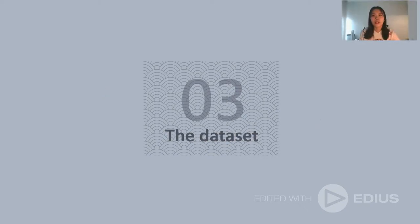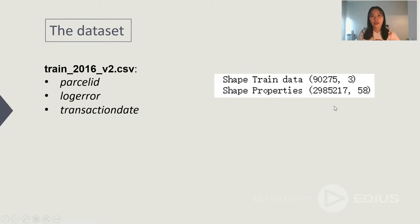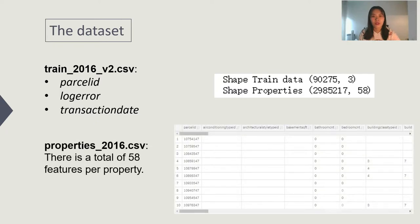In this part, I will talk about the dataset. Here we used two CSV files for analyzing. First is the Train CSV file. There are three parameters in this dataset: the parcel ID is the ID of the house, the log error is calculated by Zelo website, and the transaction date is when the transaction is due. Second is the property CSV file. There are totally 55 features per property, such as the number of bathrooms, bedrooms, etc. We can evaluate the log error by analyzing the useful features.